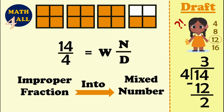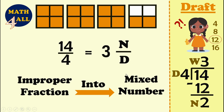Multiply 3 by 4 to get 12, then subtract: 14 minus 12 equals 2. The remainder is 2. You will write 2 as the numerator, and the denominator stays as 4.